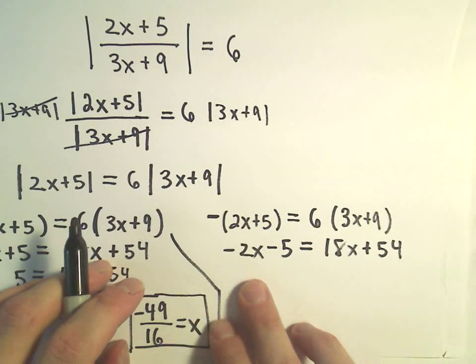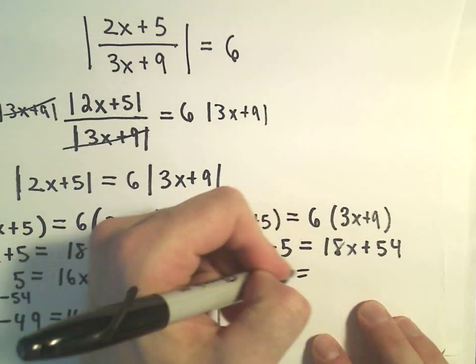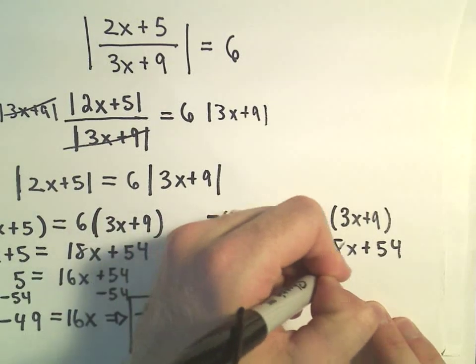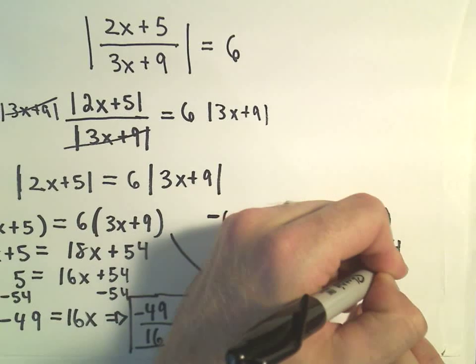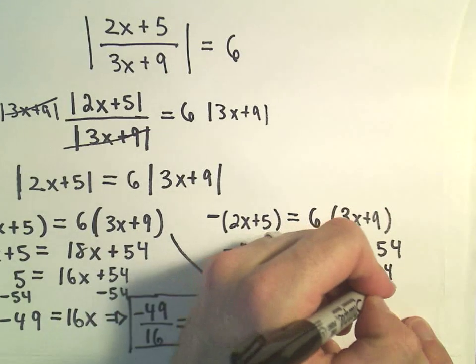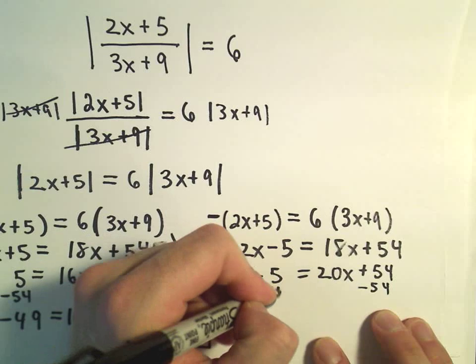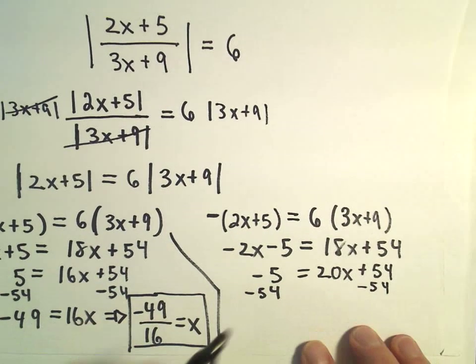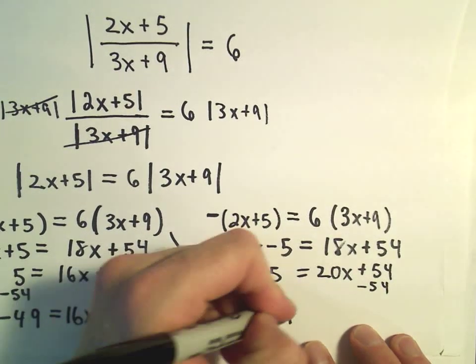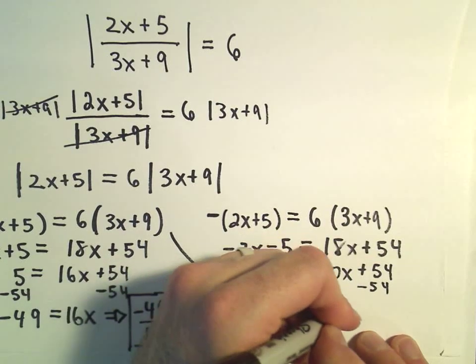If I add 2x, I'm going to get 20x on the right plus 54. And again, if I subtract 54 from both sides, now negative 5 minus 54 is negative 59 equals 20 times x.